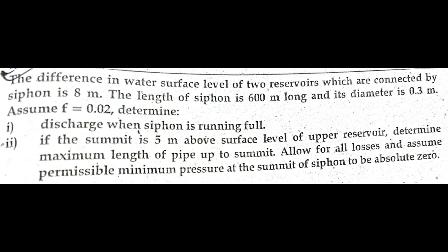The length of siphon is 600 meters long and its diameter is 0.3 meters. Assume f equals 0.02. Determine discharge when siphon is running full. And in the second case, if the summit is 5 meters above surface level of upper reservoir, determine maximum length of pipe up to summit.